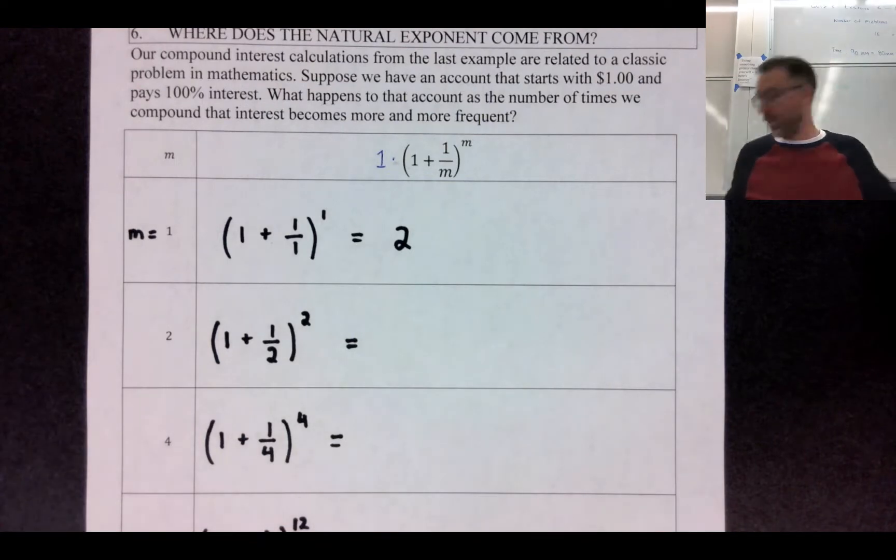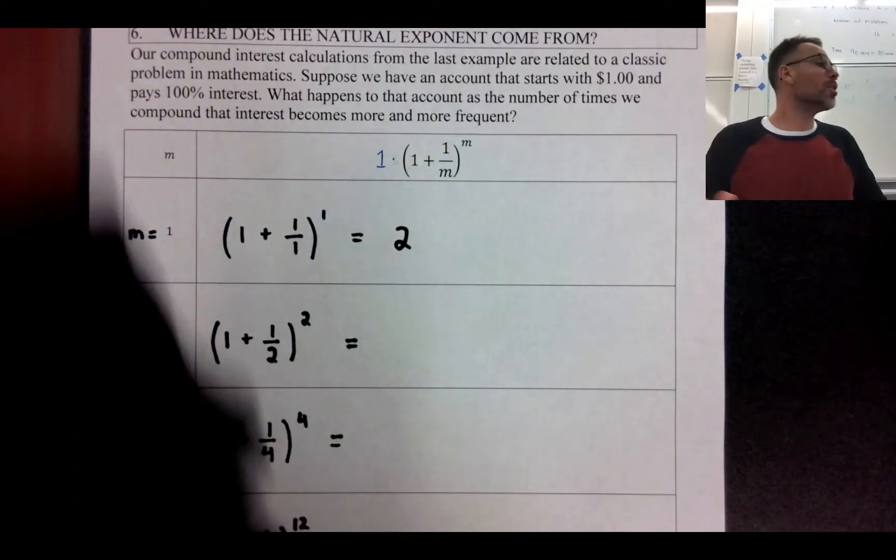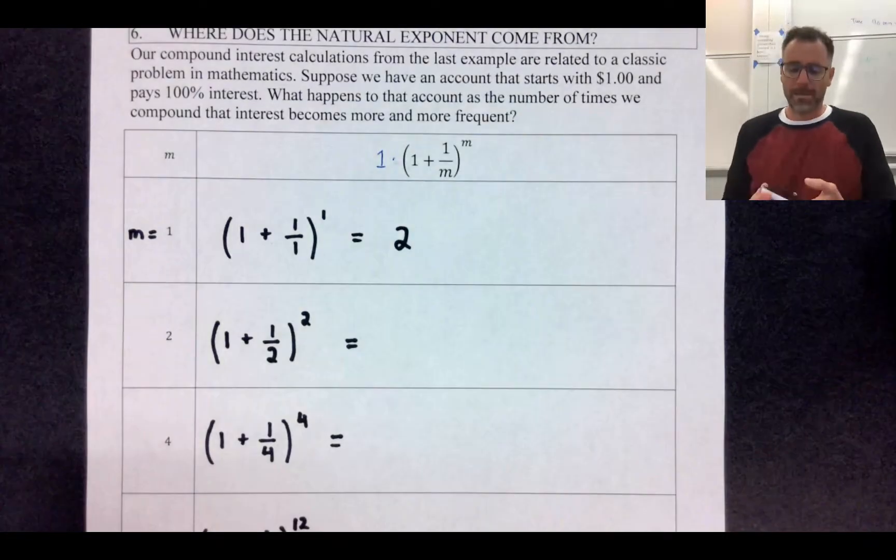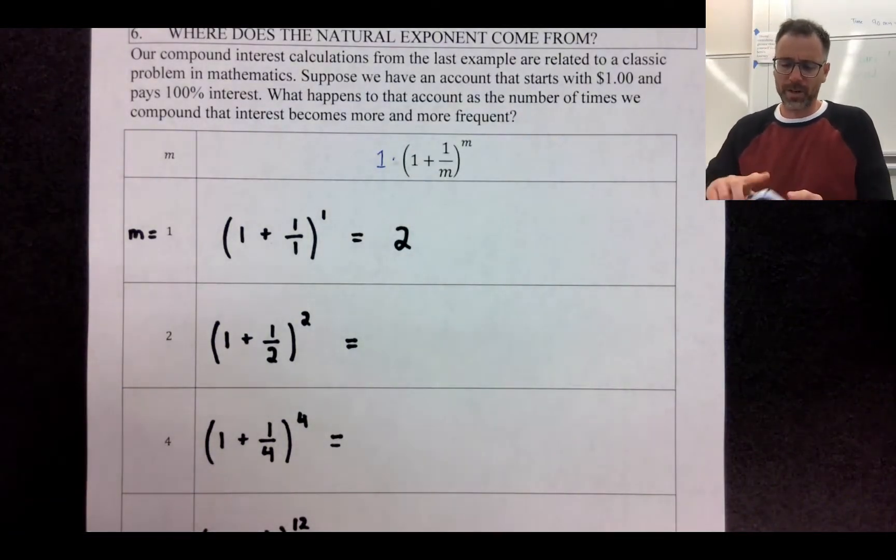So if I think about this at the end of one year if I put a dollar in the bank at 100% interest and I compound only once, in other words the bank will only write interest to my account one time that year, then the question is how much do I have at the end of the year? Well this is one plus one divided by one raised to the first power. Well that's one plus one equals two. So at the end of one year I have two dollars in the bank. I'm just going to find my phone real quick so that I can do some calculations with you.